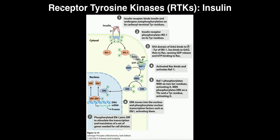First, let's break down the name. It's a receptor that has tyrosine residues on it, and it's a kinase. What this receptor is going to do is called autophosphorylation — some texts may call this cross-phosphorylation.